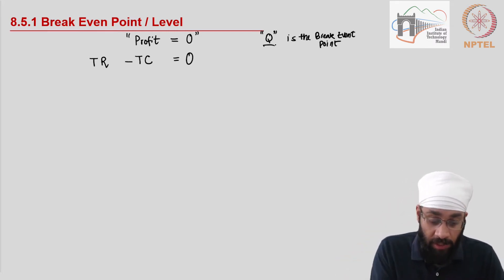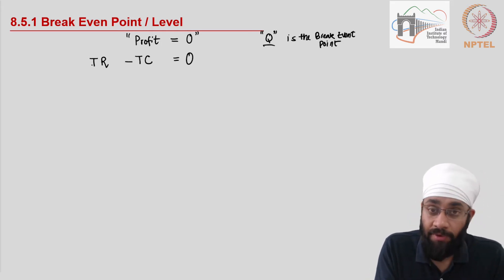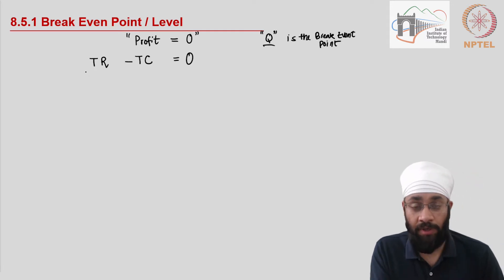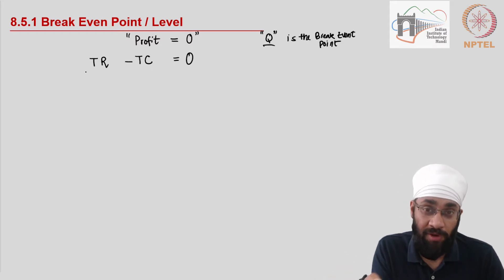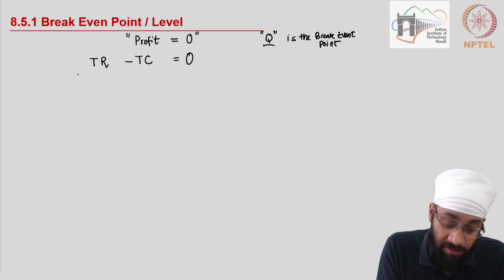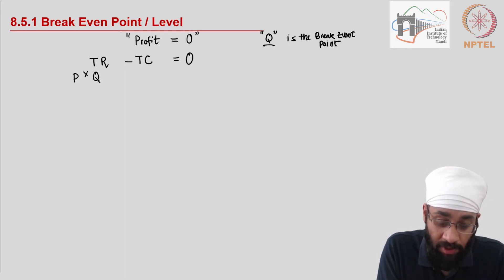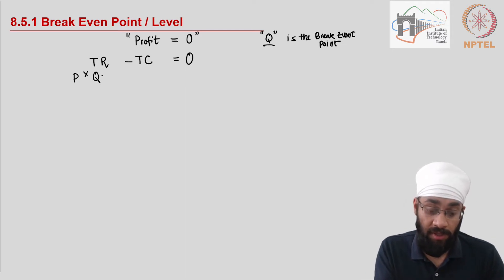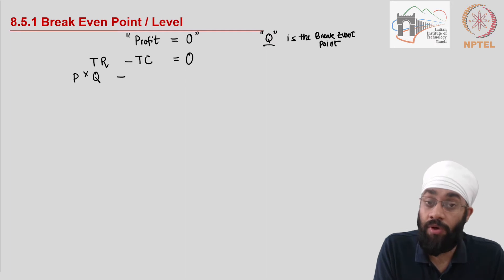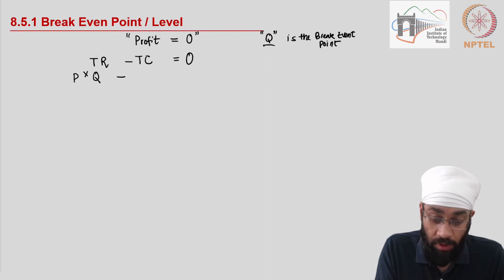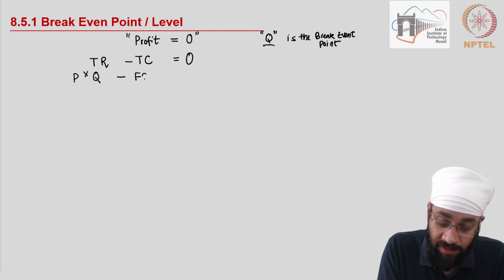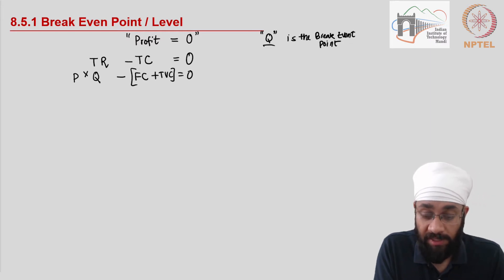The point is Q, so I have to bring in some Q's into the equation. Total revenue is calculated by multiplying revenue per unit — called price — by the quantity being sold: P times Q. I take out from this the total cost. Total cost has fixed cost and the total variable cost. These are the two components, and this has to equal zero.